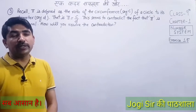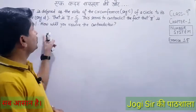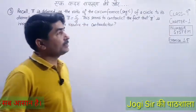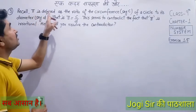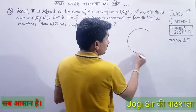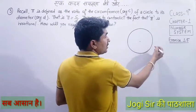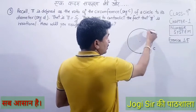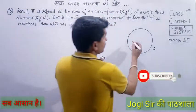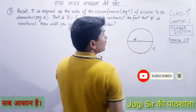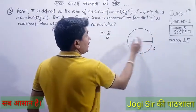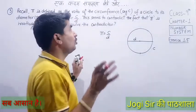In this video we are going to solve question number 3 of Exercise 1.5, Number System, Chapter 1, Class 9. Question number 3: Recall that π is defined as the ratio of the circumference C of a circle to its diameter d — that is, π = C/d. Whether it is a small circle or big circle, it is always C/d.